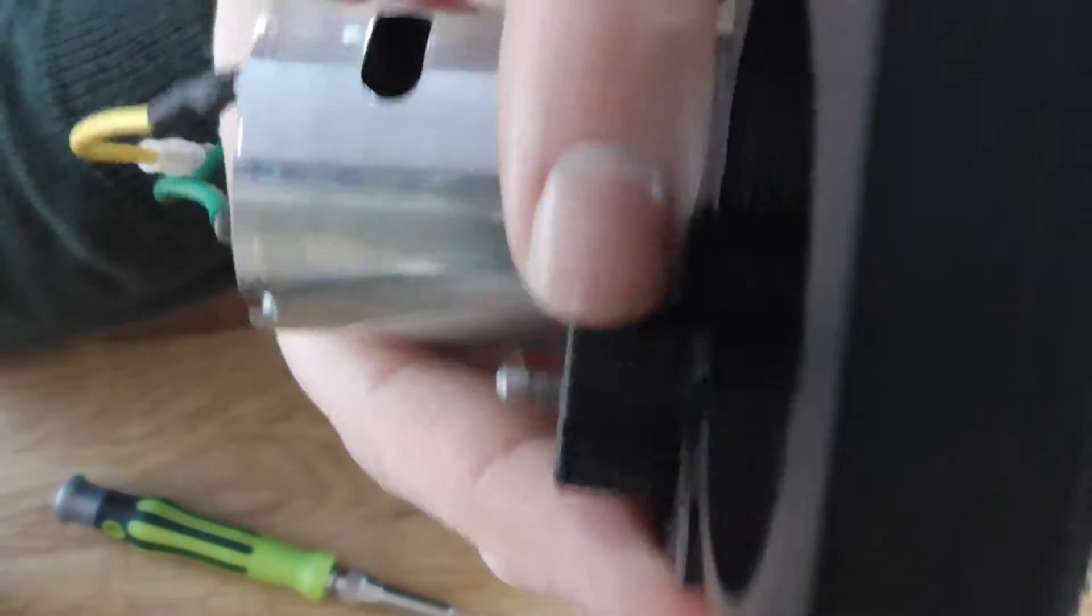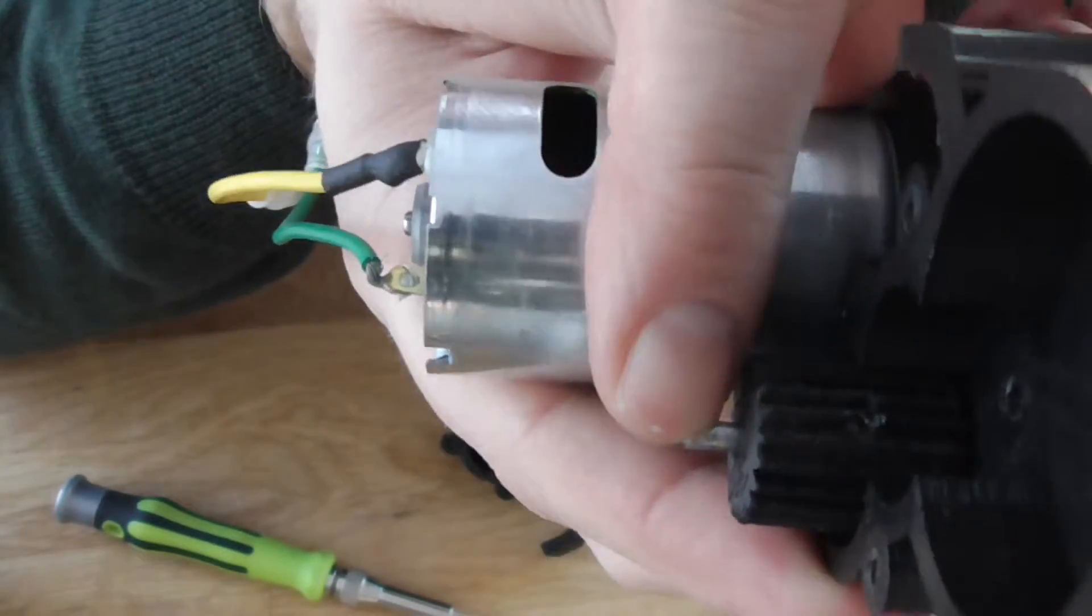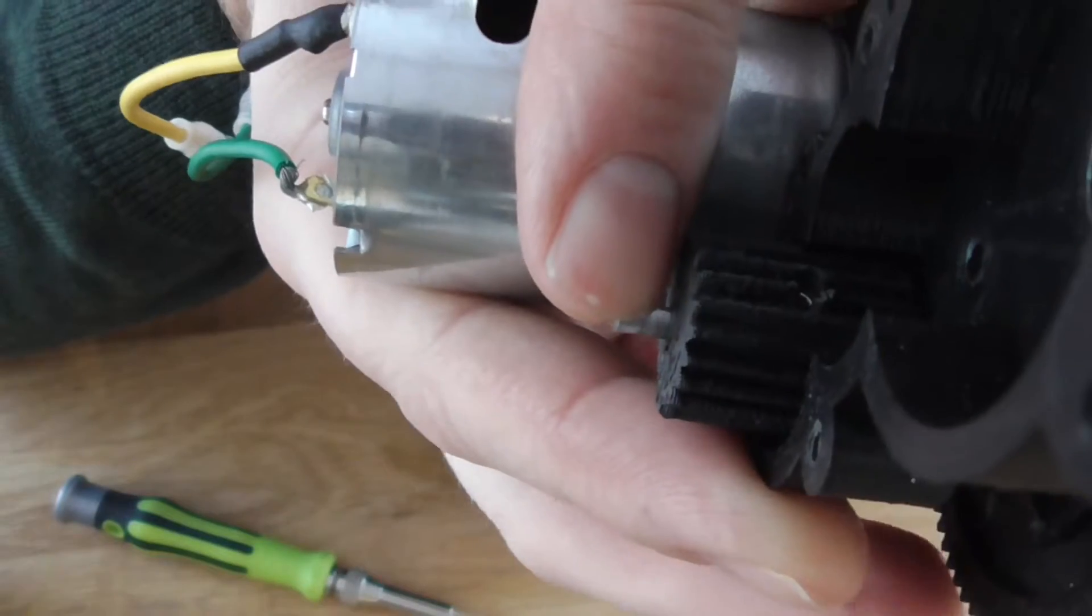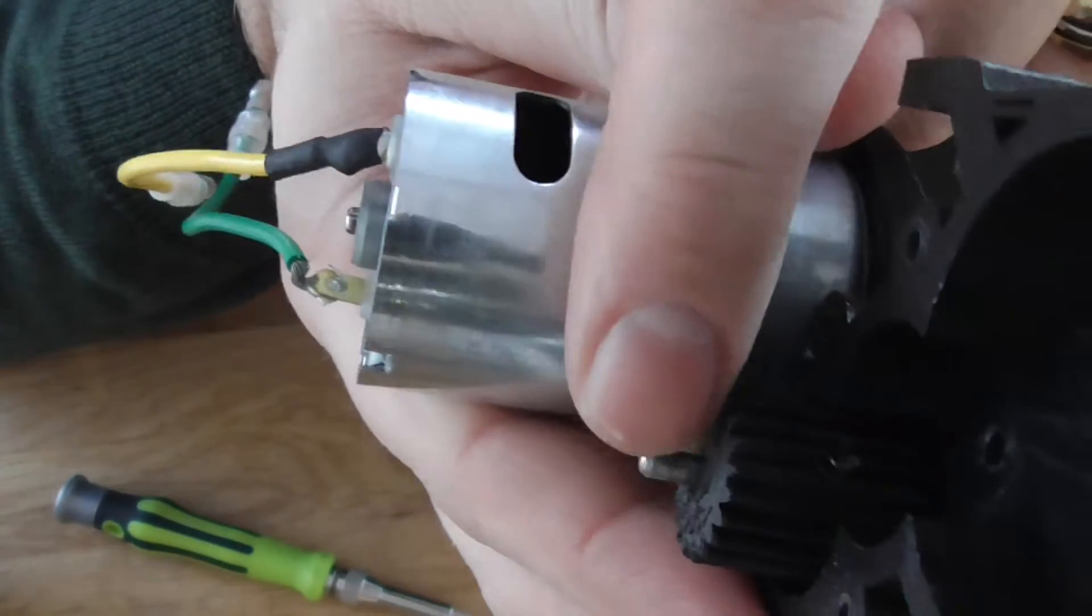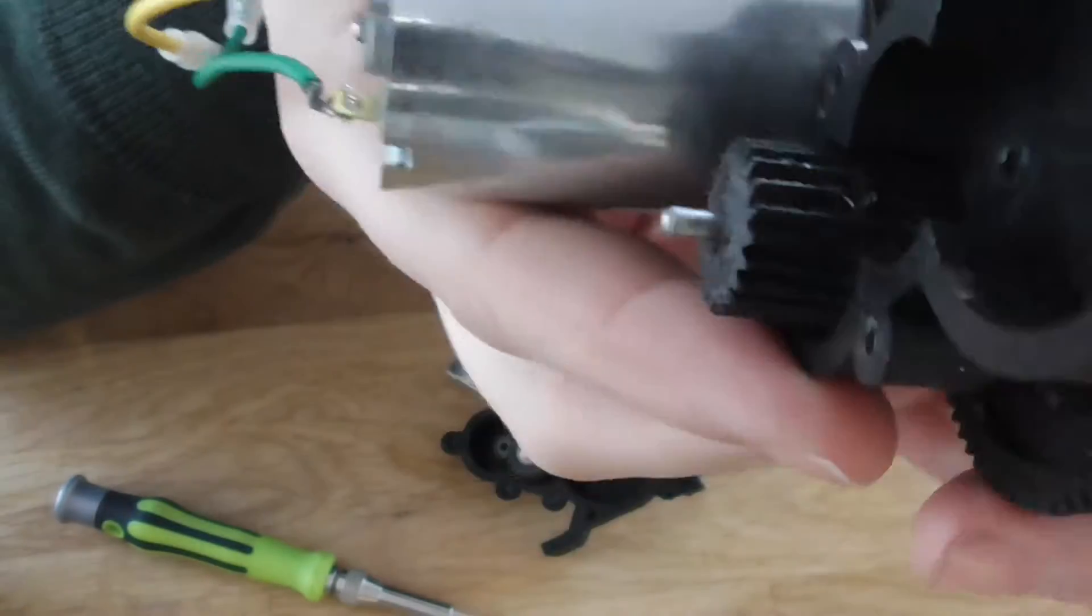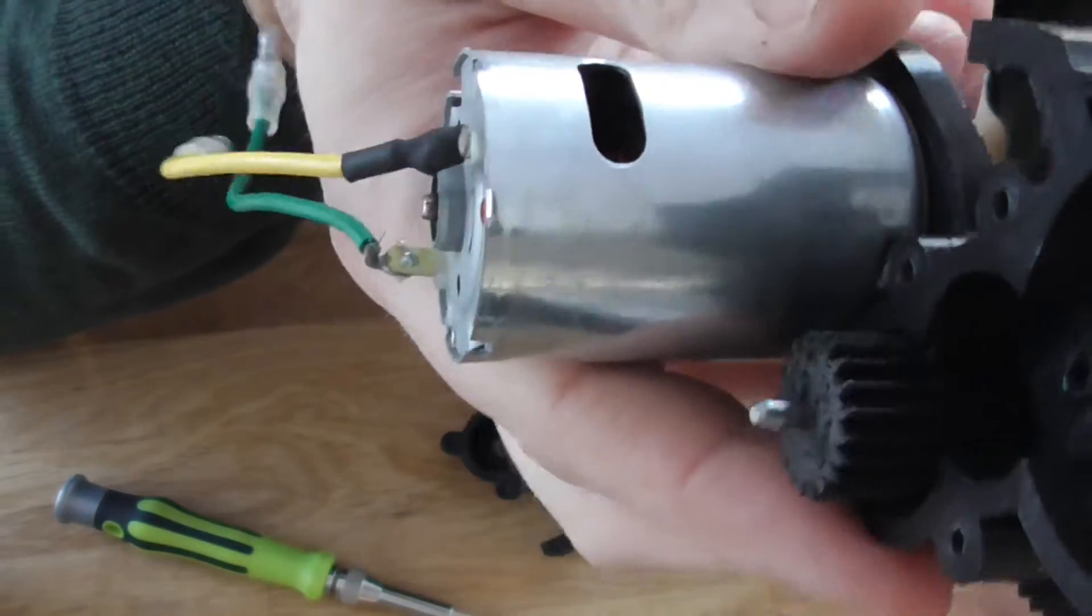And what I did also was I used a little file on the shaft to file a flat on one side where the grub screw would go into, and not allow this gear to turn except with the shaft.